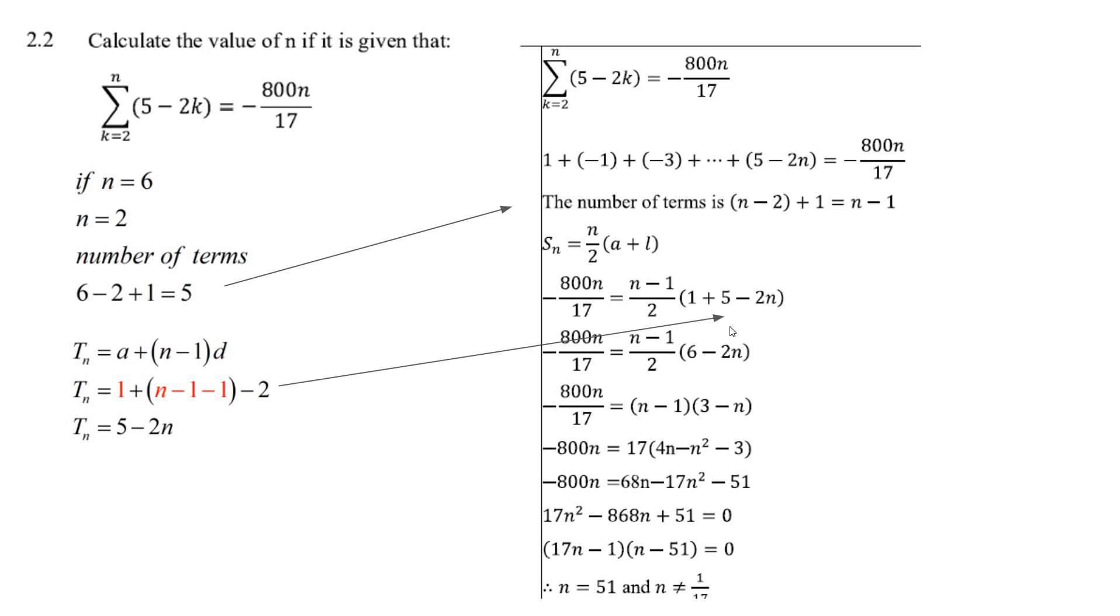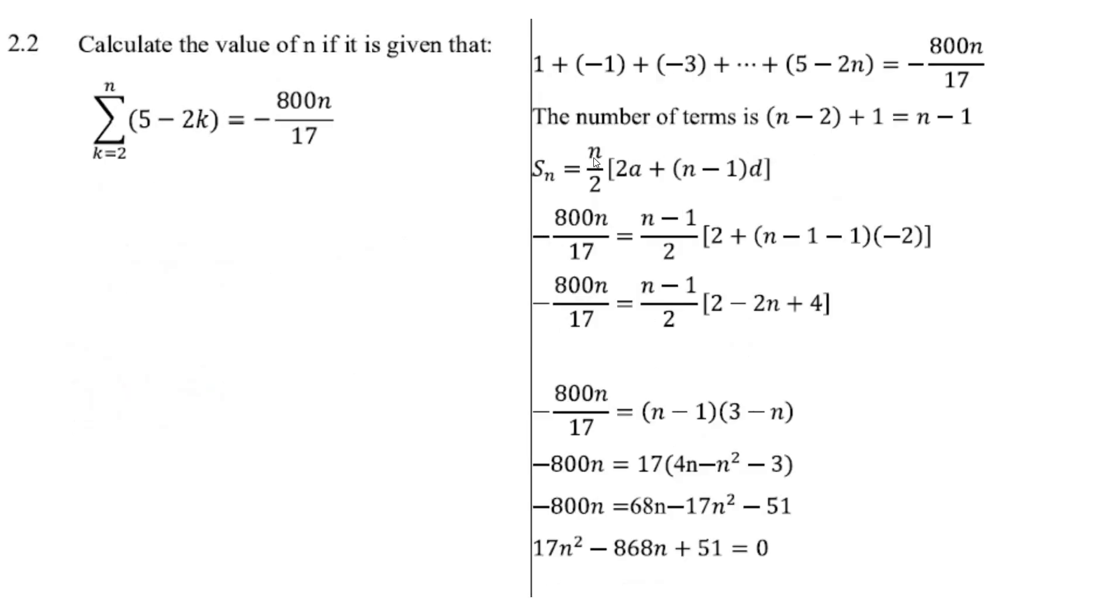This is the way I was kind of showing people how to do it. There's the last term right there, 5 minus 2n. The first term plus the last term. You could use the other formula, n over 2. You just put n minus 1 in for n. a is 1, so it's 2 times 1. n minus 1 goes in for n. But d is minus 2. And you multiply it out. You get the same thing. 6 minus 2n. You factor out 2. You get 3 minus n. The 2s cancel.